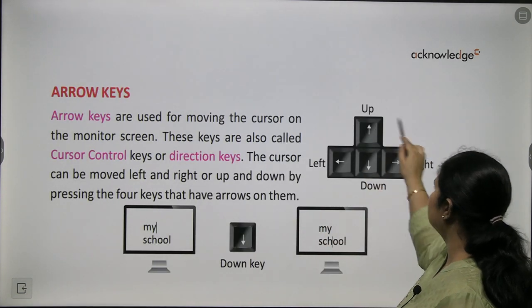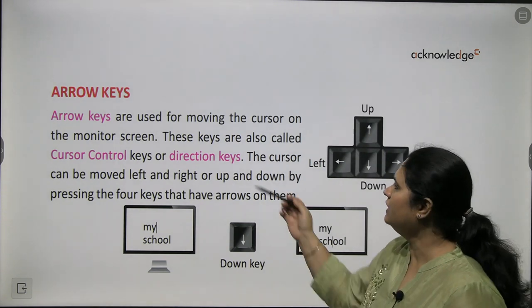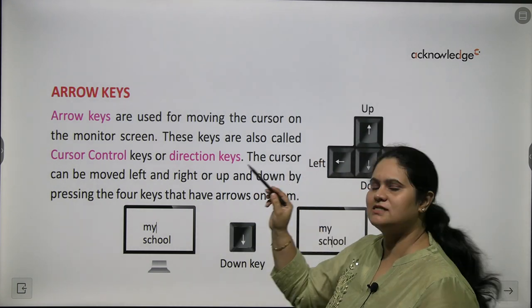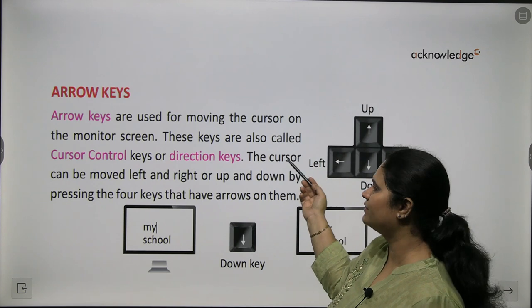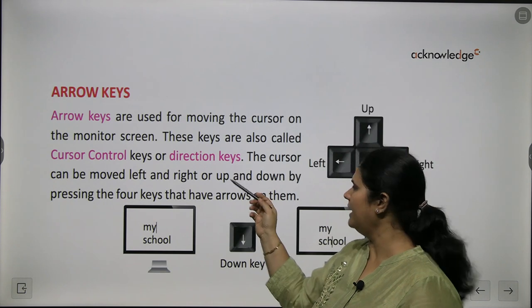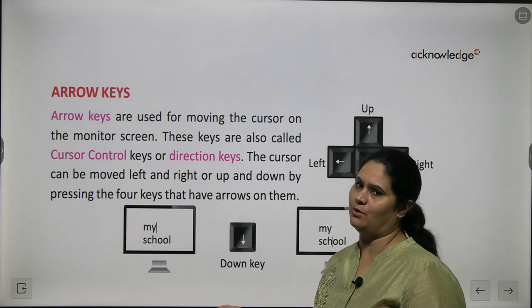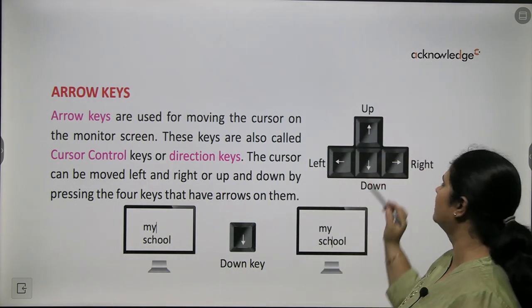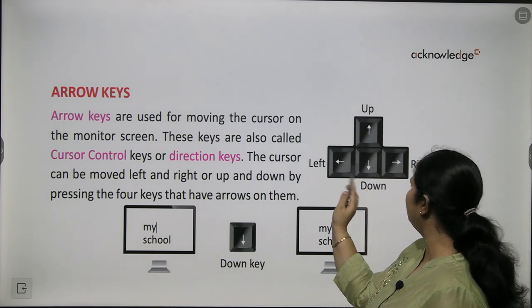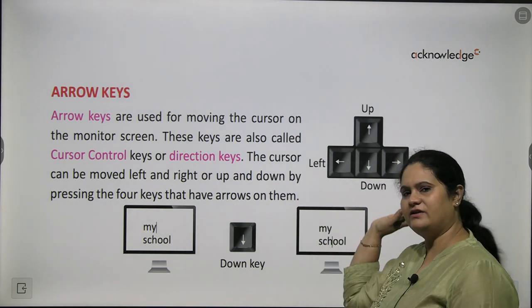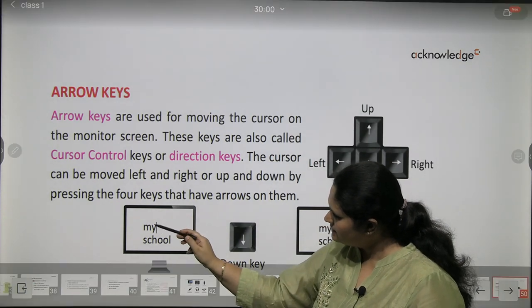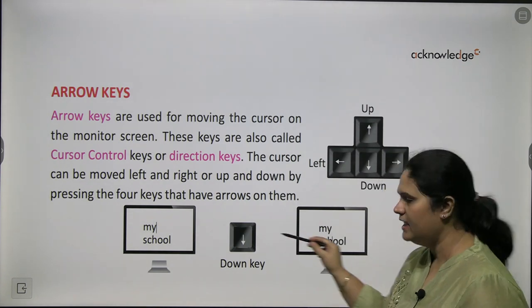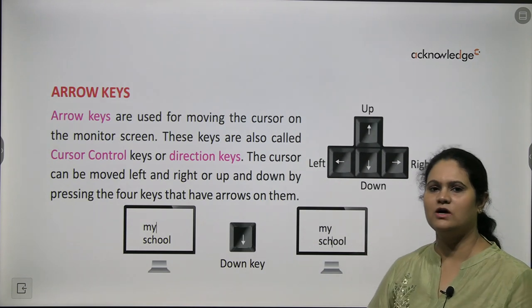There are also arrow keys on the keyboard. We use them for moving the cursor — this blinking line that we call a cursor. These arrow keys are used to move the cursor on the monitor screen. These keys are also called cursor control keys or direction keys. The cursor can be moved left, right, up, and down using these arrow keys. For example, if I want to move the cursor downwards, I use the down key, and as you can see, the cursor moves just below where it was.